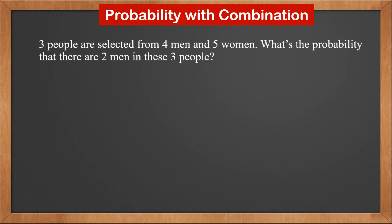For example, 3 people are selected from 4 men and 5 women. What's the probability that there are 2 men in these 3 people?